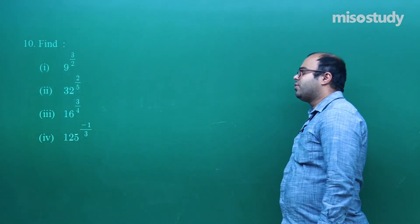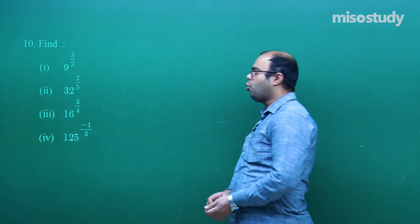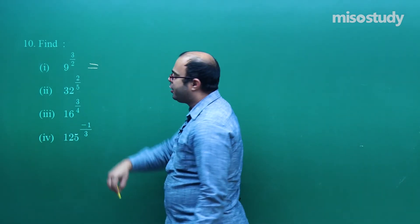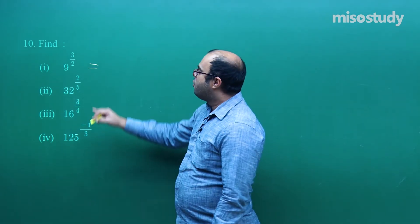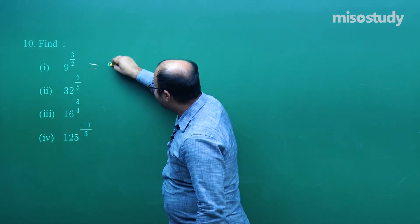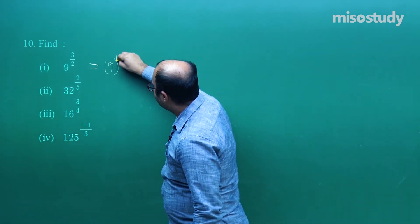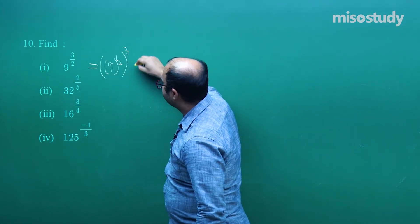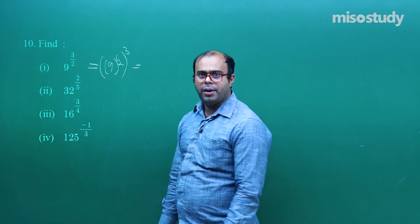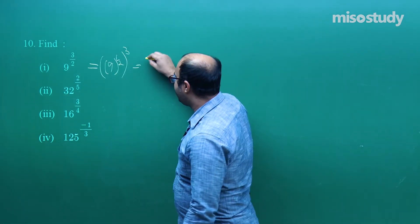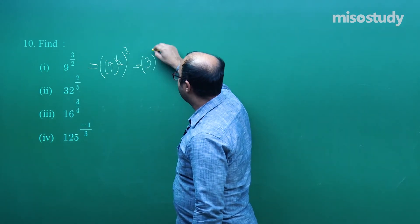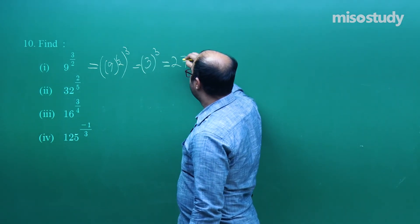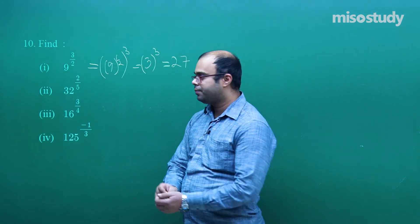Next question: find the simplified values of the following. First, 9^(3/2). We rewrite this as (9^(1/2))³. Now 9^(1/2) = √9 = 3, and 3³ = 27. So the answer is 27.